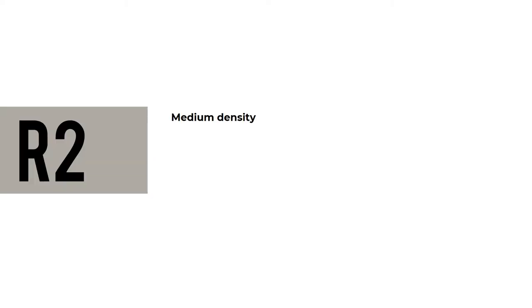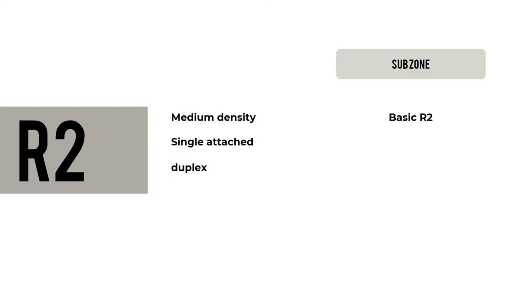R2 is characterized by medium density, single attached, and duplex. R2 has subzones: basic R2, which features up to 3 stories, and maximum R2, which features up to 5 stories.